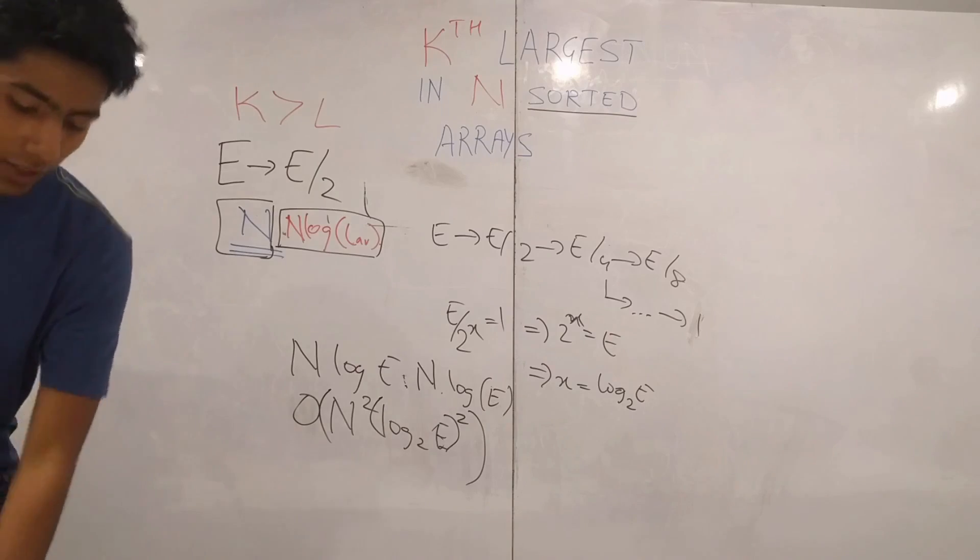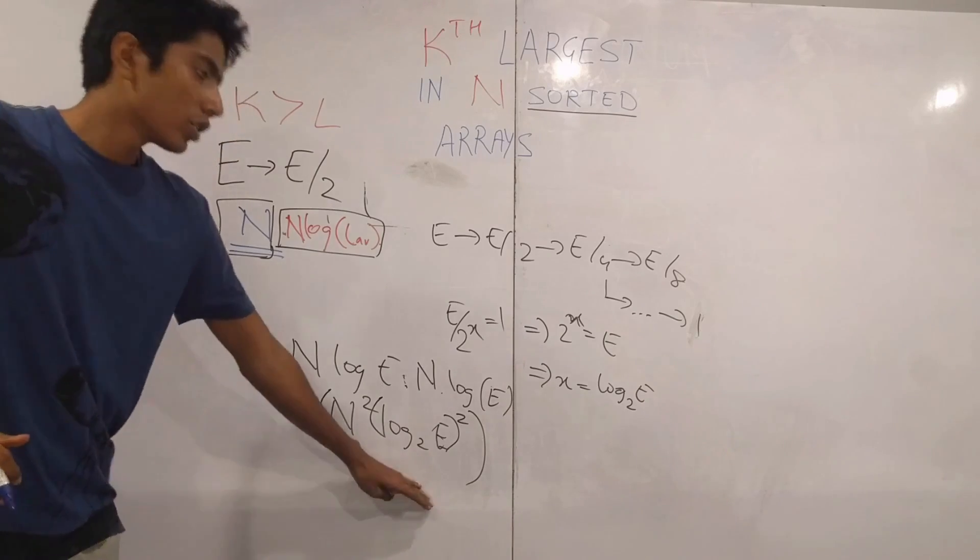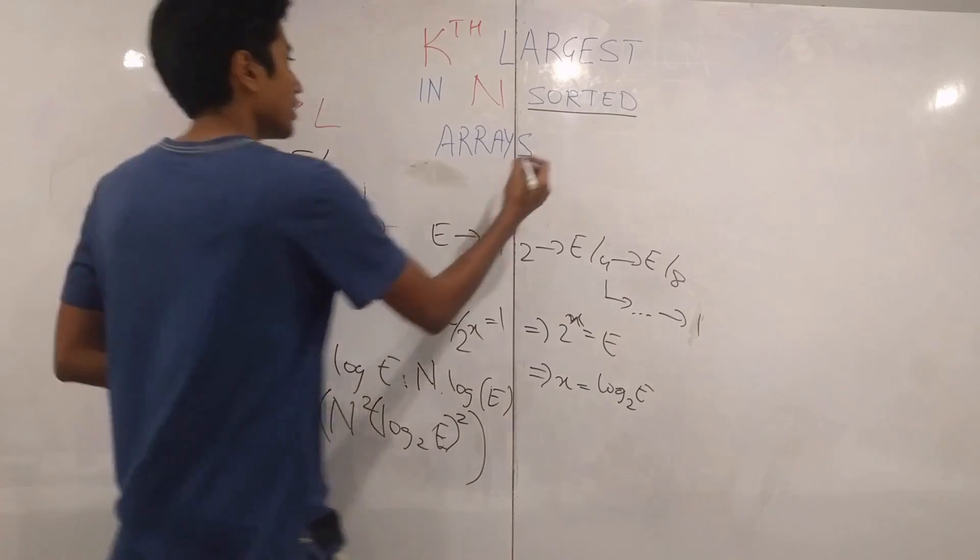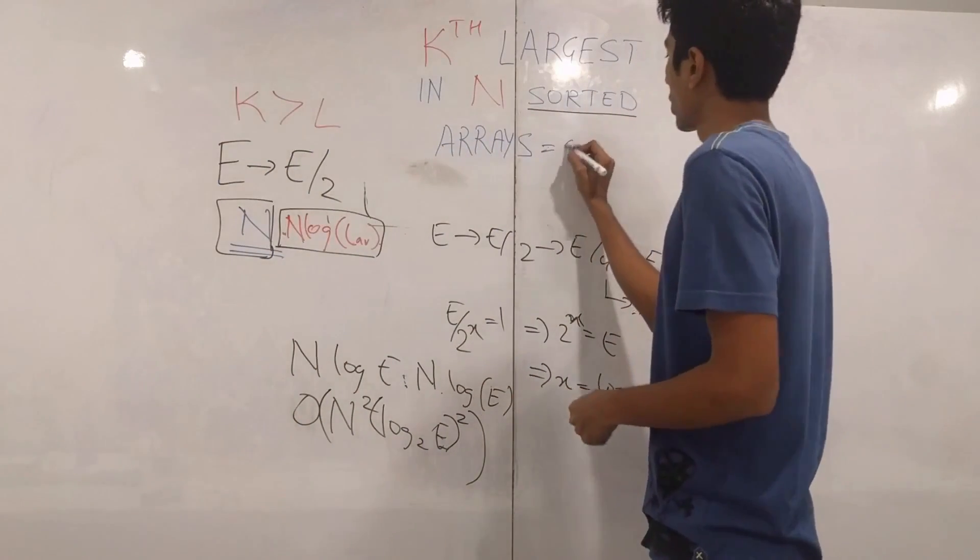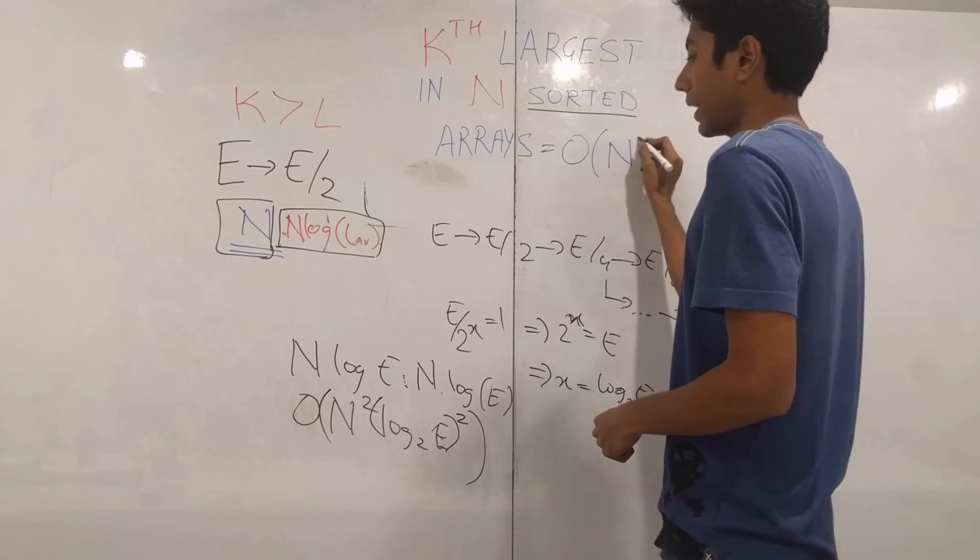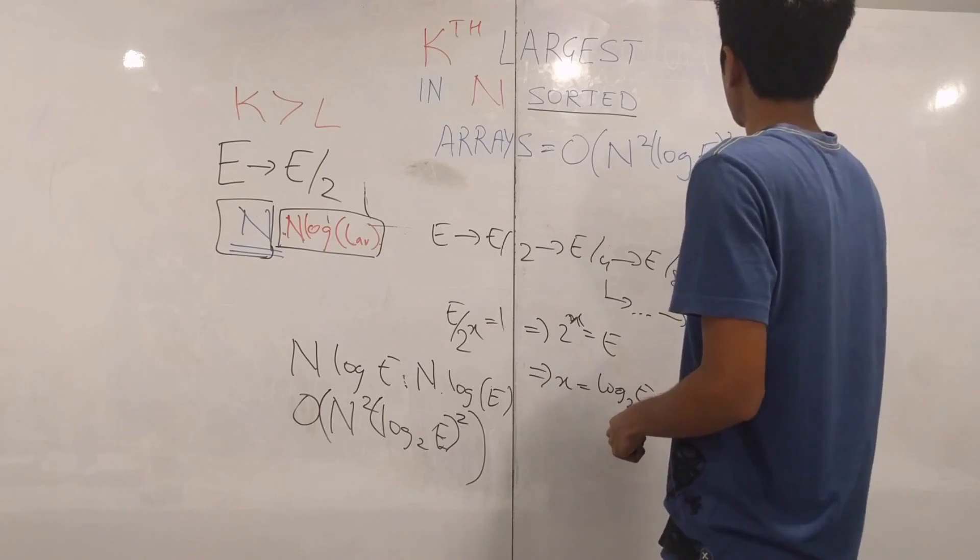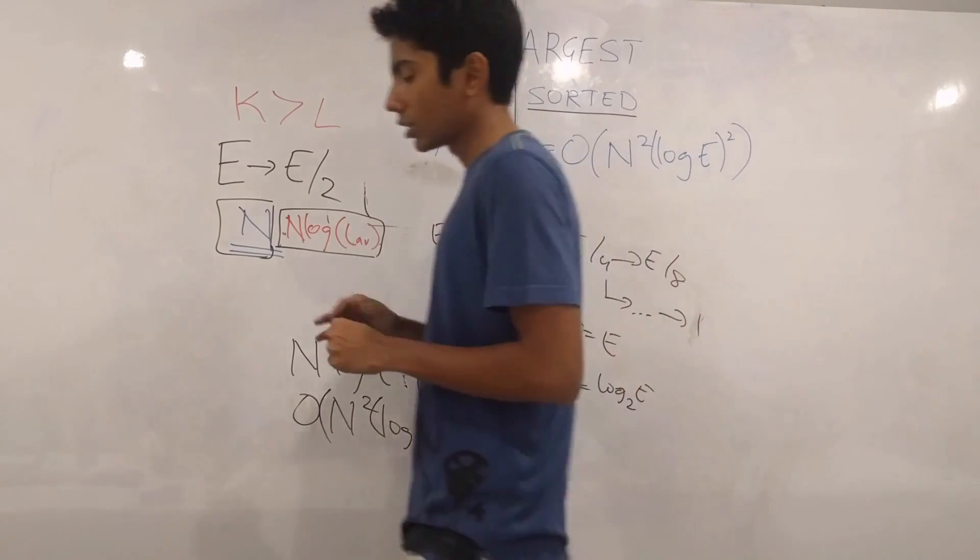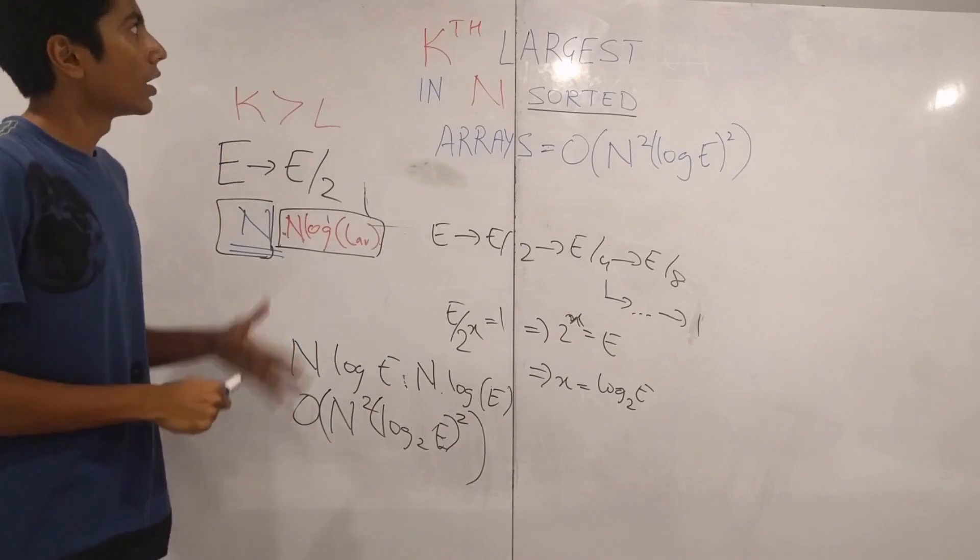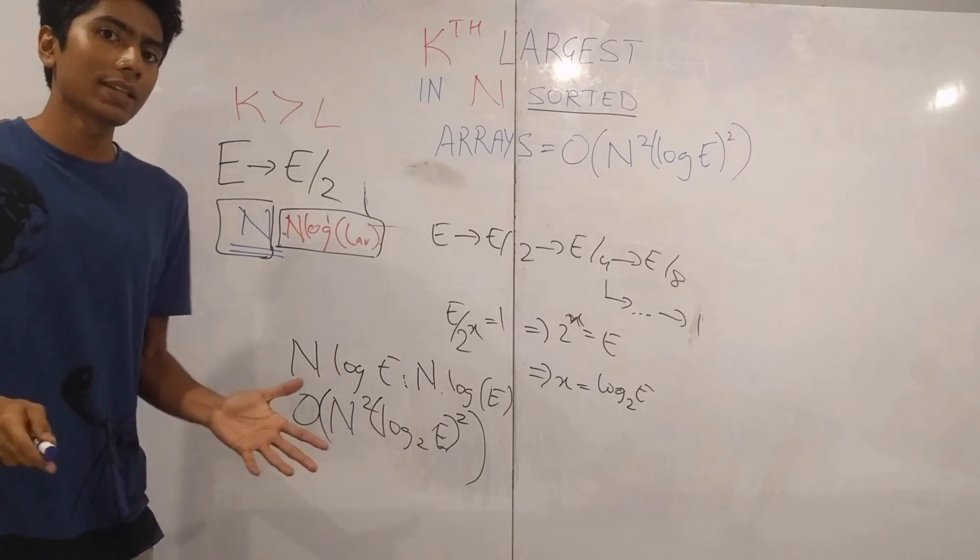Finally, we have come to the conclusion that the time that we need to do this kind of operation is order of n square log e the whole square. And that's how we find the kth largest in n sorted arrays.